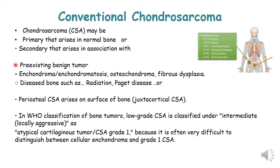Conventional chondrosarcoma may arise either as a primary tumor in previously healthy bone, or secondary, arising from pre-existing benign disease such as enchondroma, enchondromatosis, osteochondroma, multiple familial osteochondromatosis, or fibrous dysplasia. It can also occur secondarily in diseased bone such as irradiated bone or bone with Paget's disease. A third form is juxtacortical chondrosarcoma, which arises on the surface of bone.